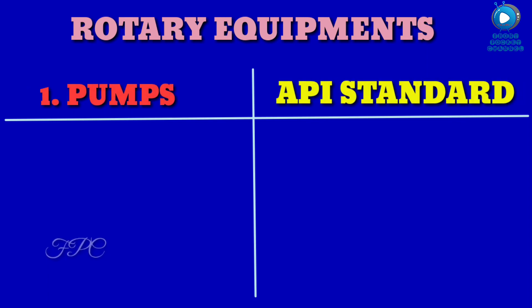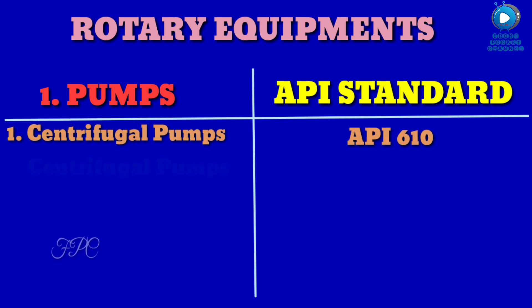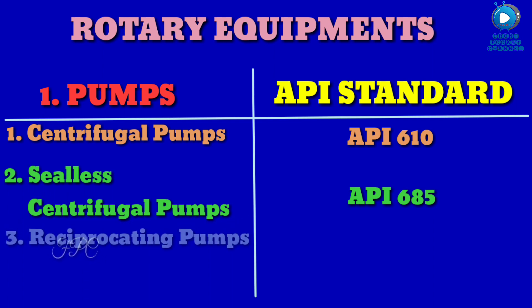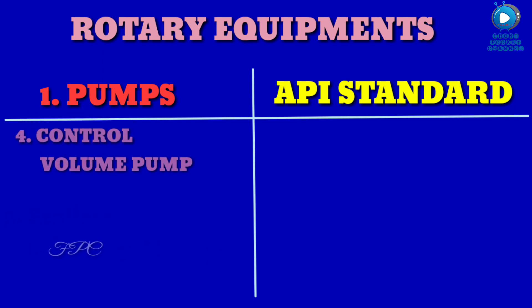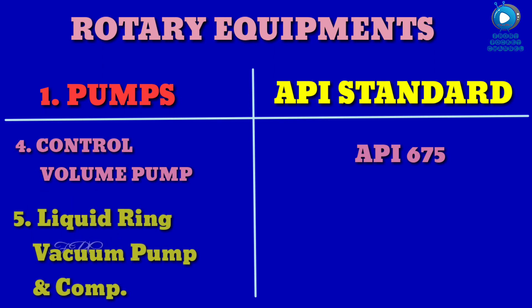API standards for rotary equipment pumps: number one, centrifugal pumps, API 610; number two, sealless centrifugal pumps, API 685; number three, reciprocating pumps, API 674; number four, controlled volume pumps, API 610; number five, liquid ring vacuum pump and compressor, API 681.